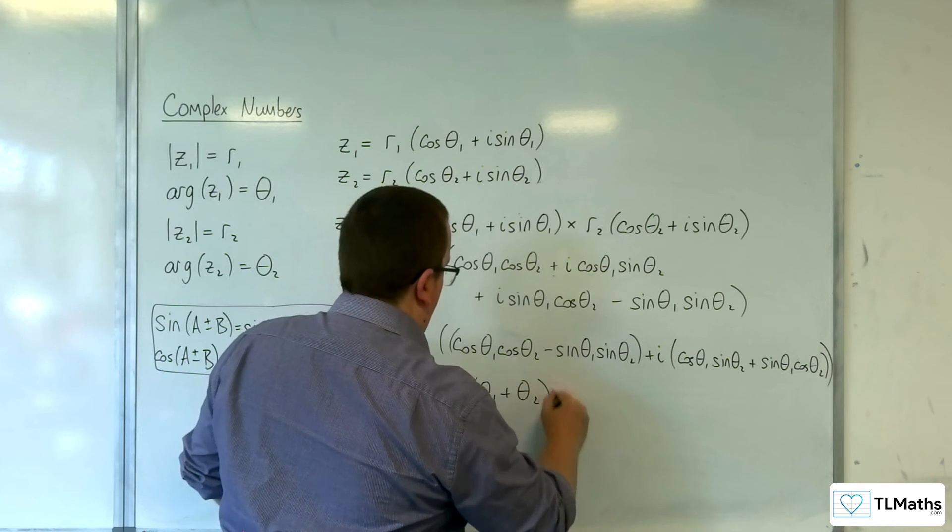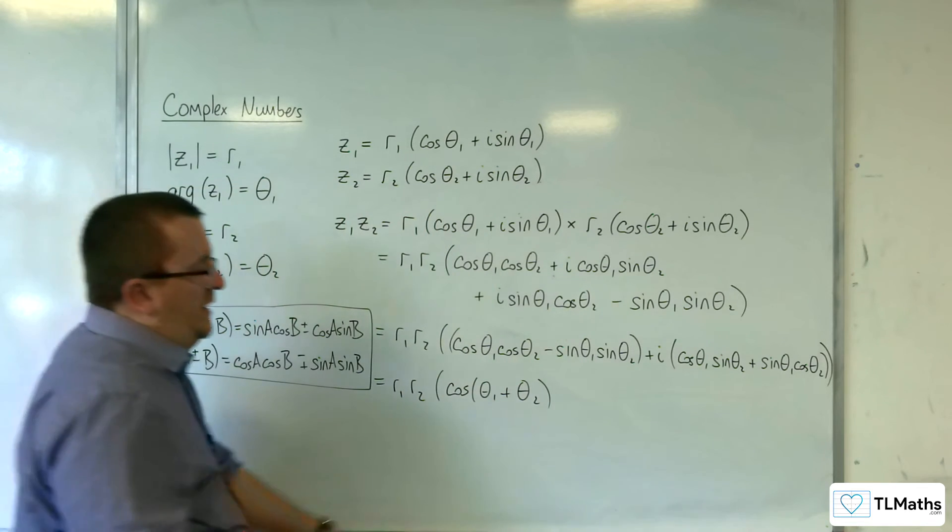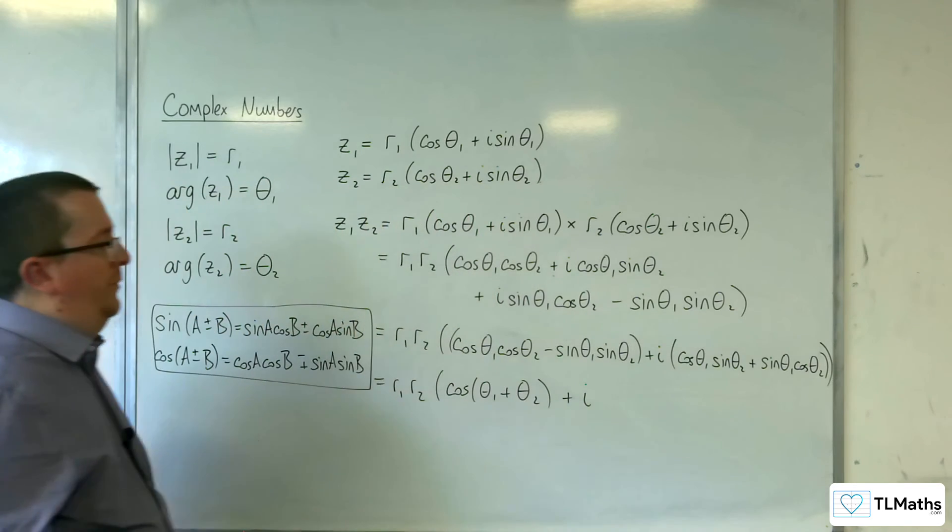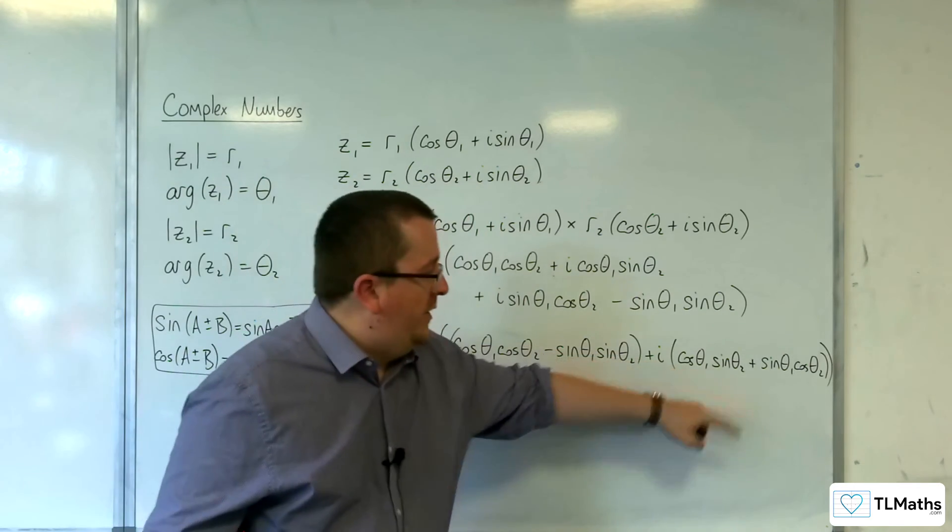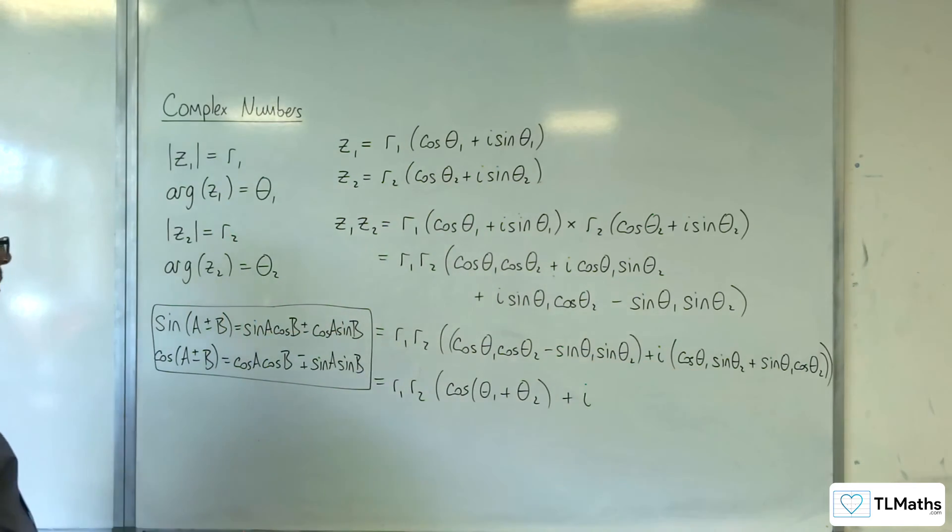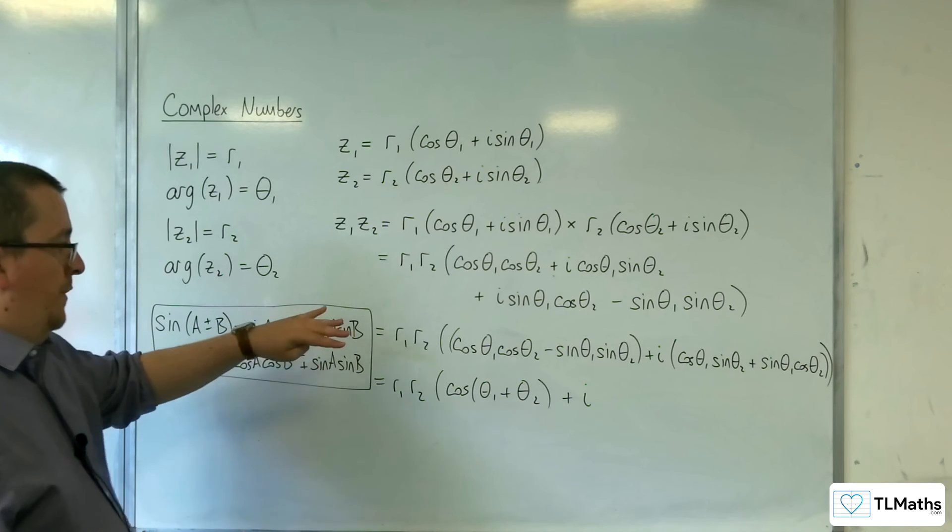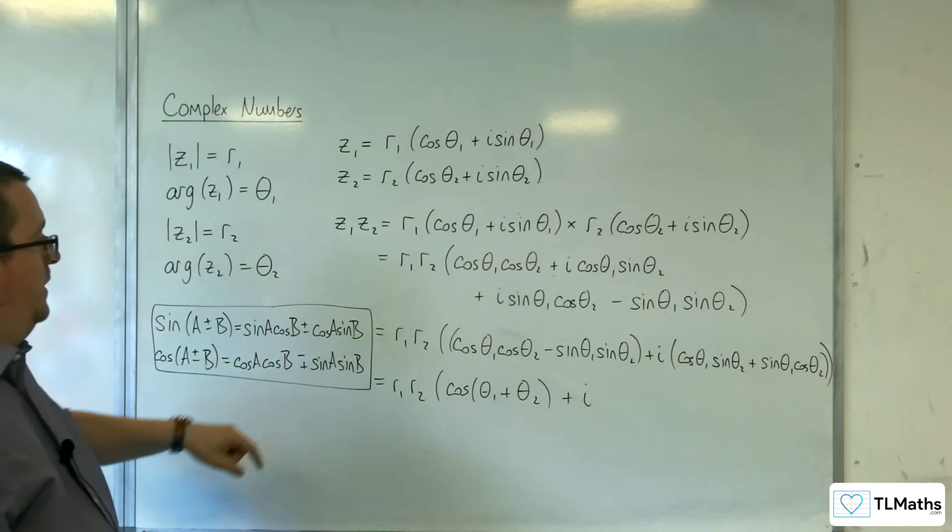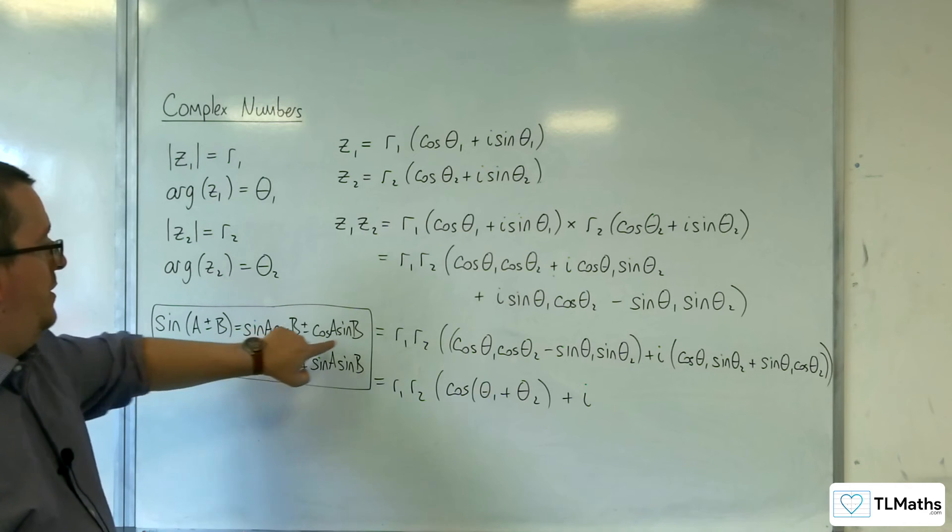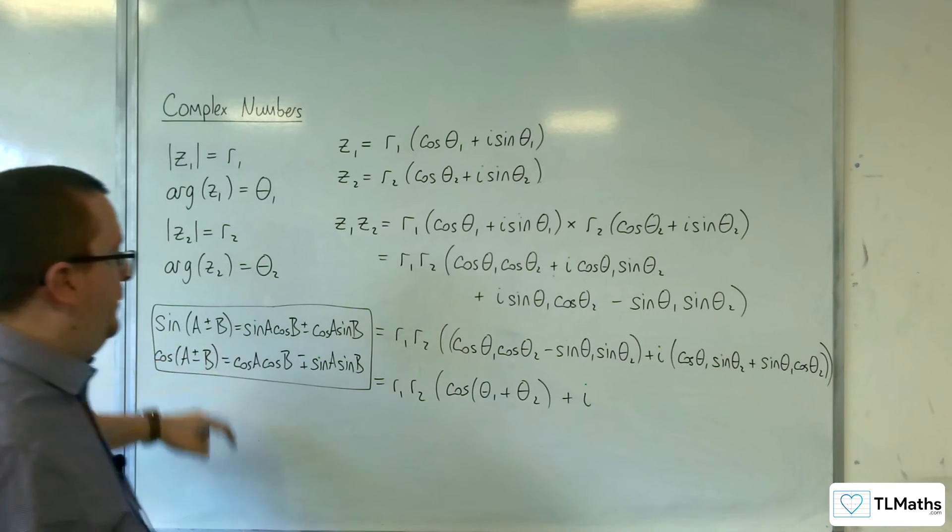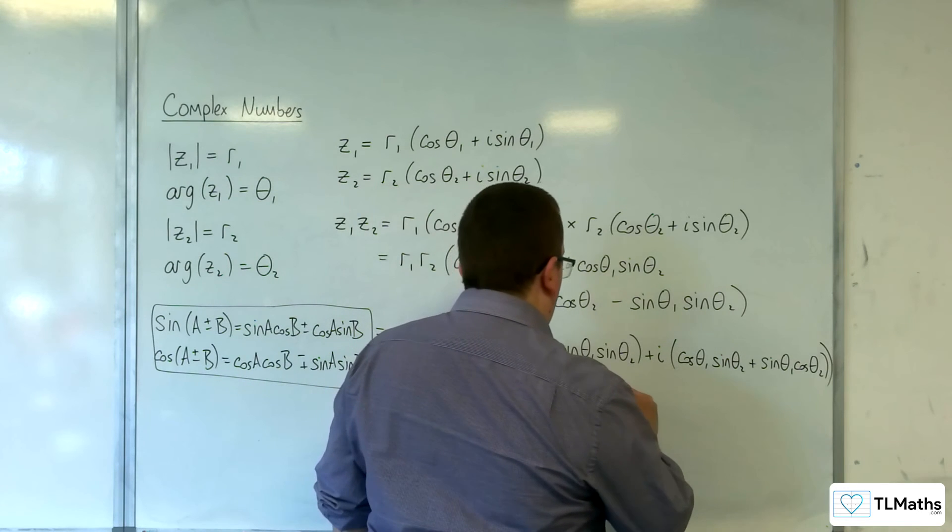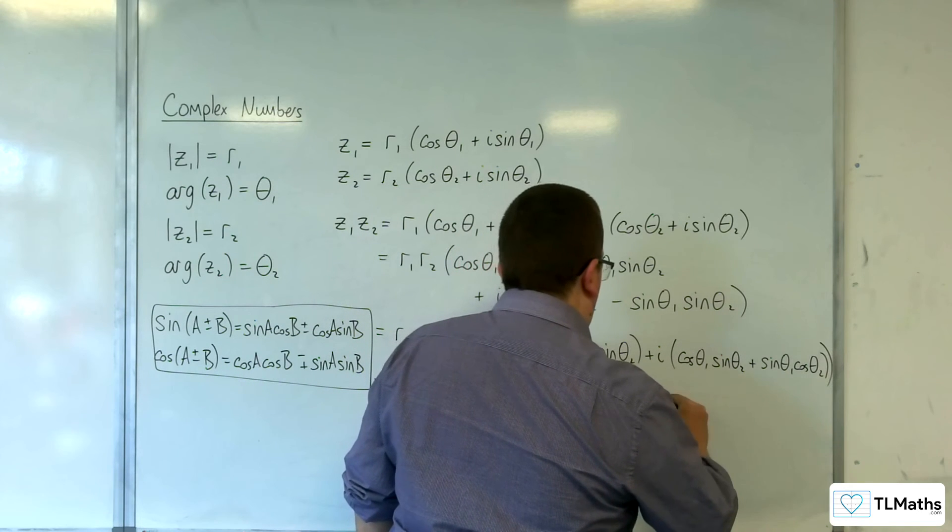And then you've got plus i times, now here you've got cosine sine plus sine cosine, or you can reverse order it if you like because of the plus. So sine cosine cosine sine with a plus in the middle, that means that's a plus, so that's sine of theta1 plus theta2.